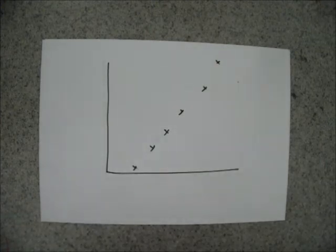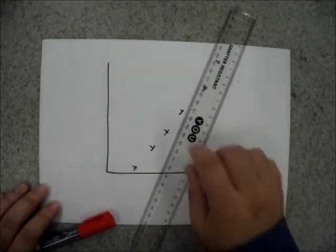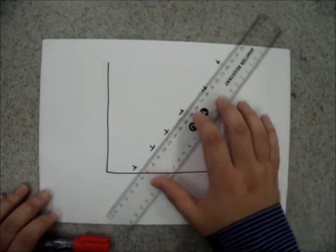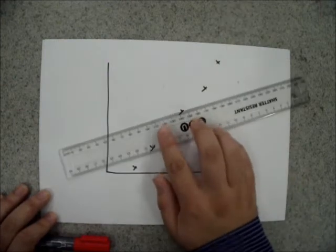One of the other mistakes, sometimes seen, is where a line of best fit goes through at least one of the points, but the angle, the gradient of the line, is either too steep, or too shallow.